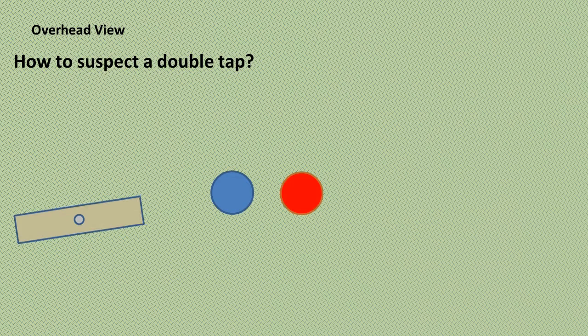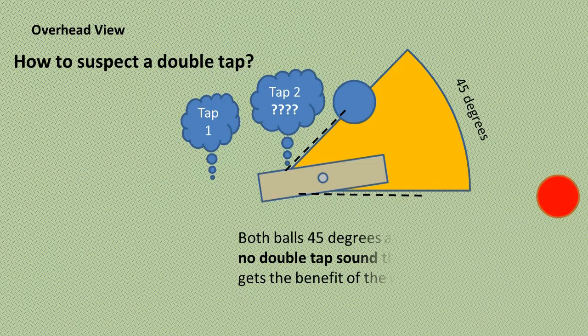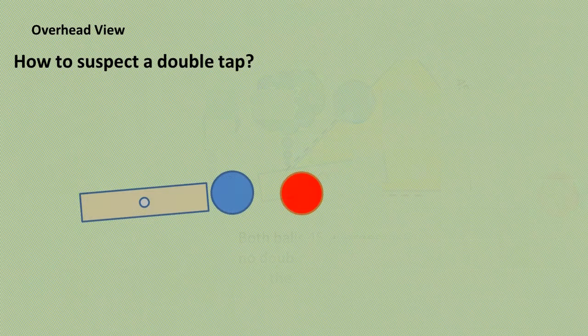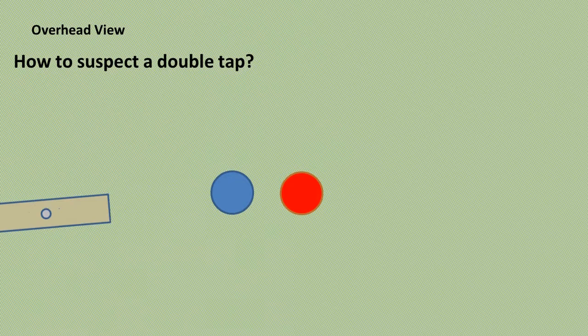If there was no double tap sound, then the striker gets the benefit of the doubt. If the two balls travel apart at less than 45 degrees, then a double tap has almost certainly occurred.